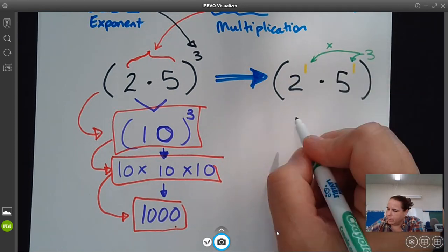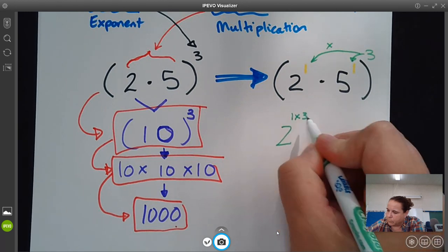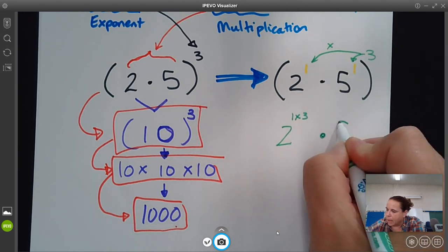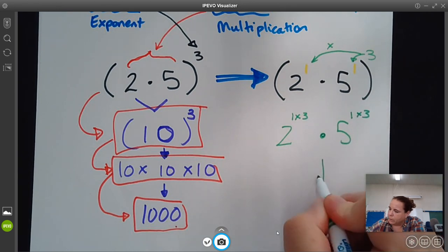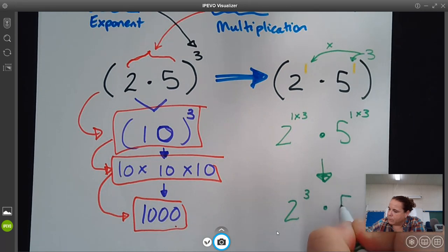So this is going to be 2, and the exponent is 1 times 3, times 5, and that exponent of 1 times 3. So then the equivalent expression is 2 to the third times 5 to the third.